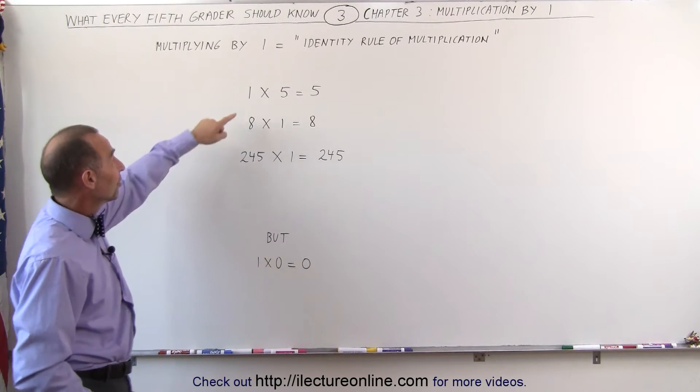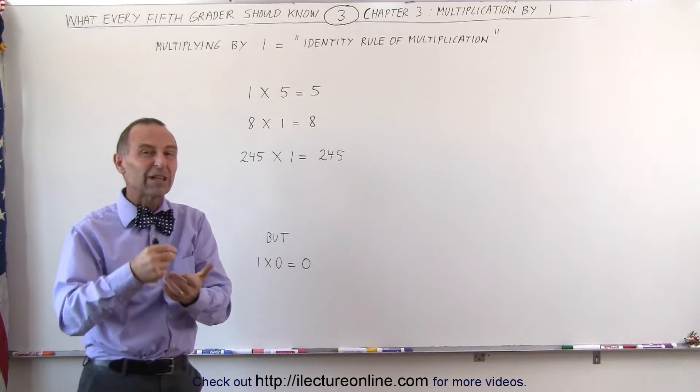For example, if you say 1 times 5, that is equal to 5. That means you only have one of them.